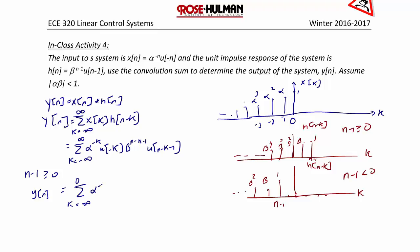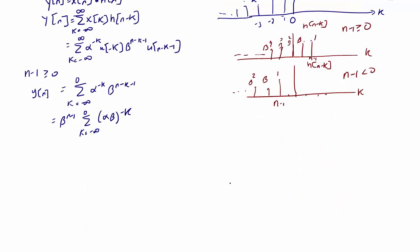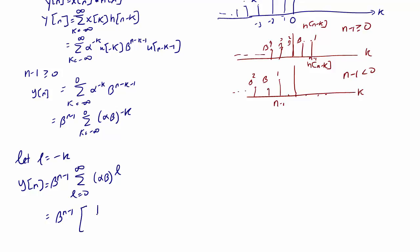That summation is α^(−k) · β^(n−k−1). Removing β^(n−1), we have β^(n−1) times the summation from k = −∞ to 0 of (αβ)^(−k). Letting l = −k, we get y[n] = β^(n−1) · summation from l = 0 to ∞ of (αβ)^l, which equals β^(n−1) · 1/(1 − αβ). This is the answer for n ≥ 1, written as u[n−1].